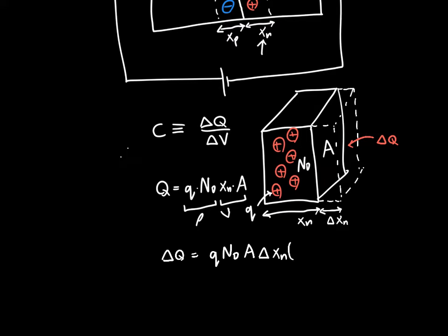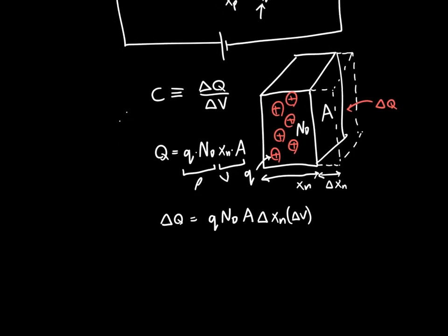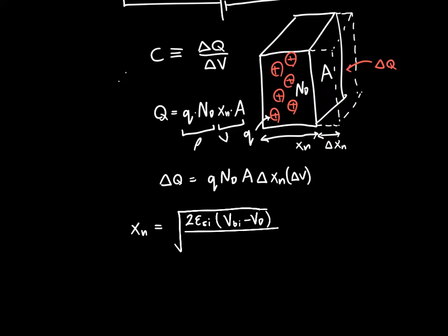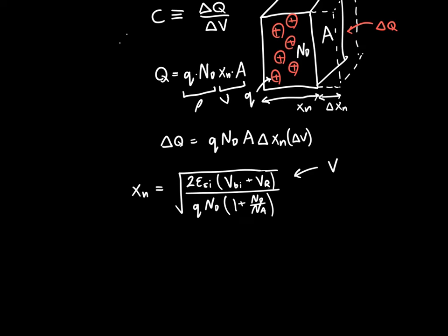More specifically, we want to find delta xn as a function of delta V, and ideally a linear function, if we want a linear capacitor. We can do this by plugging in two different values of V and finding the difference. We have the expression for xn — it's the square root of 2·epsilon_silicon·(Vbi + Vr) divided by q·Nd·(1 + Nd/Na). We can separate the constants from the voltage dependence.